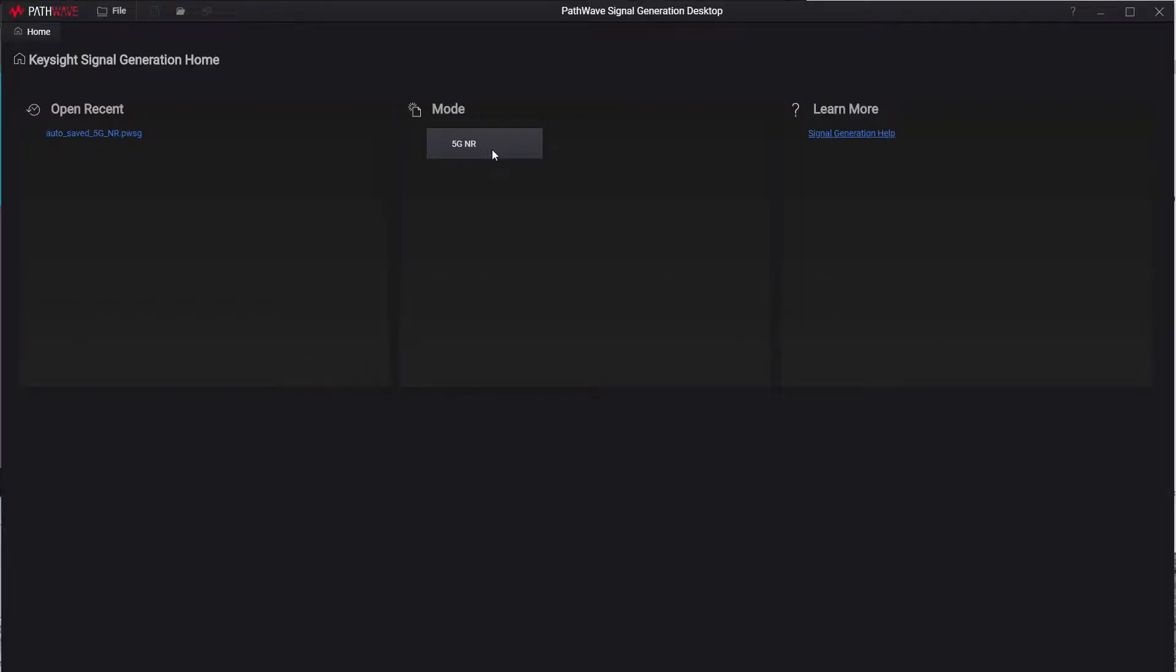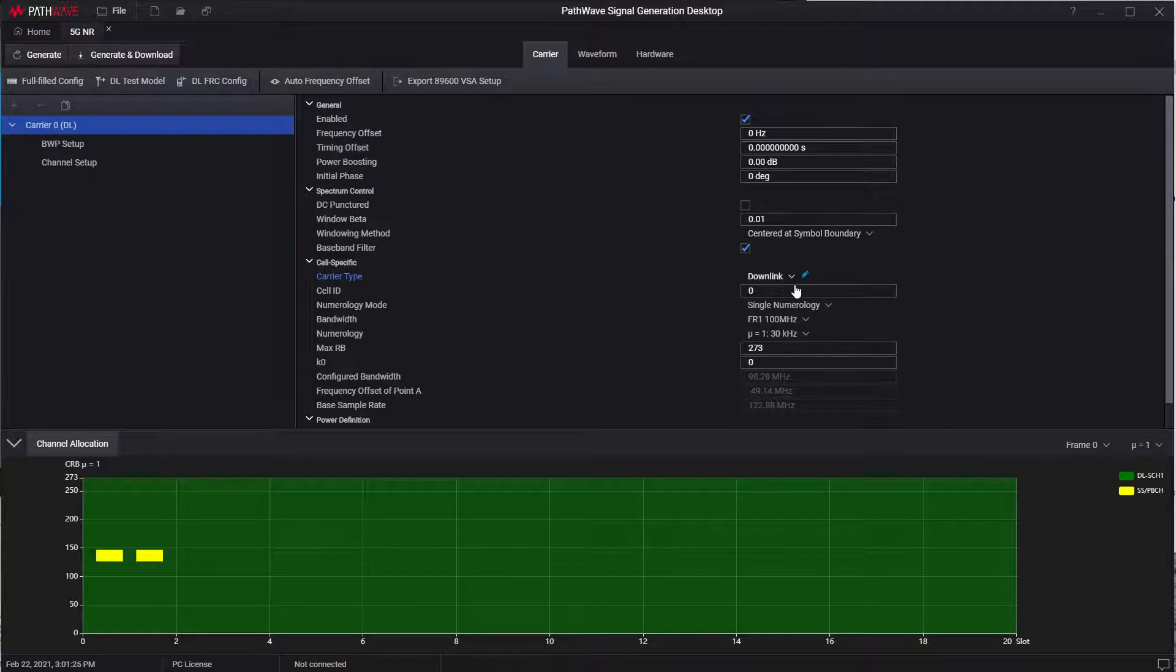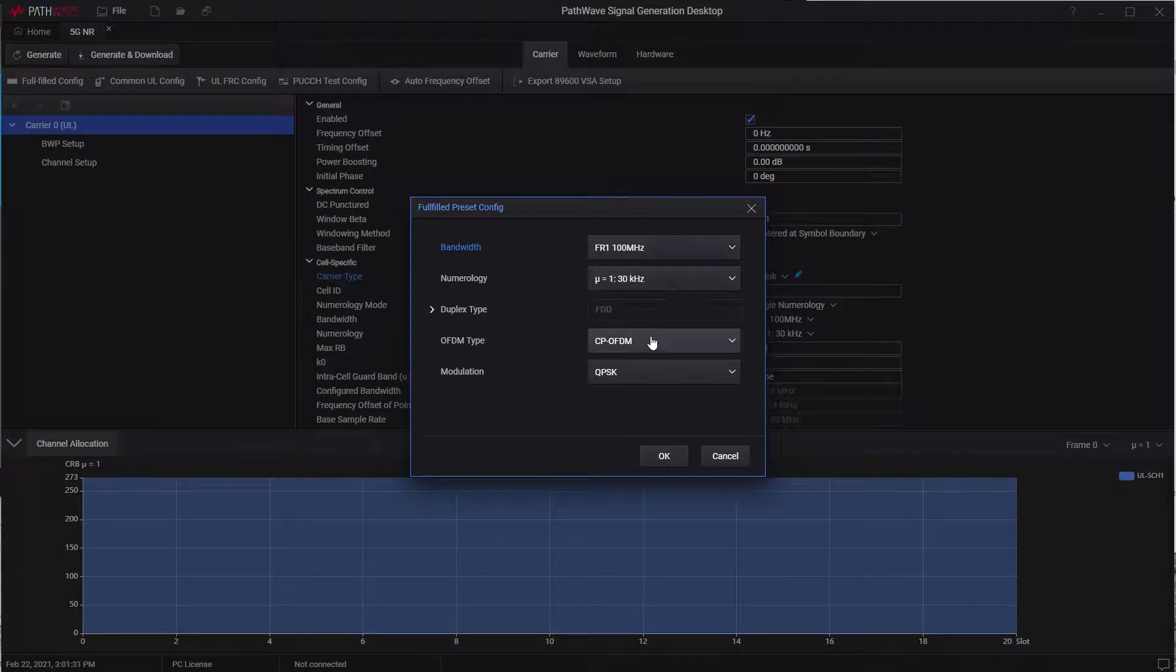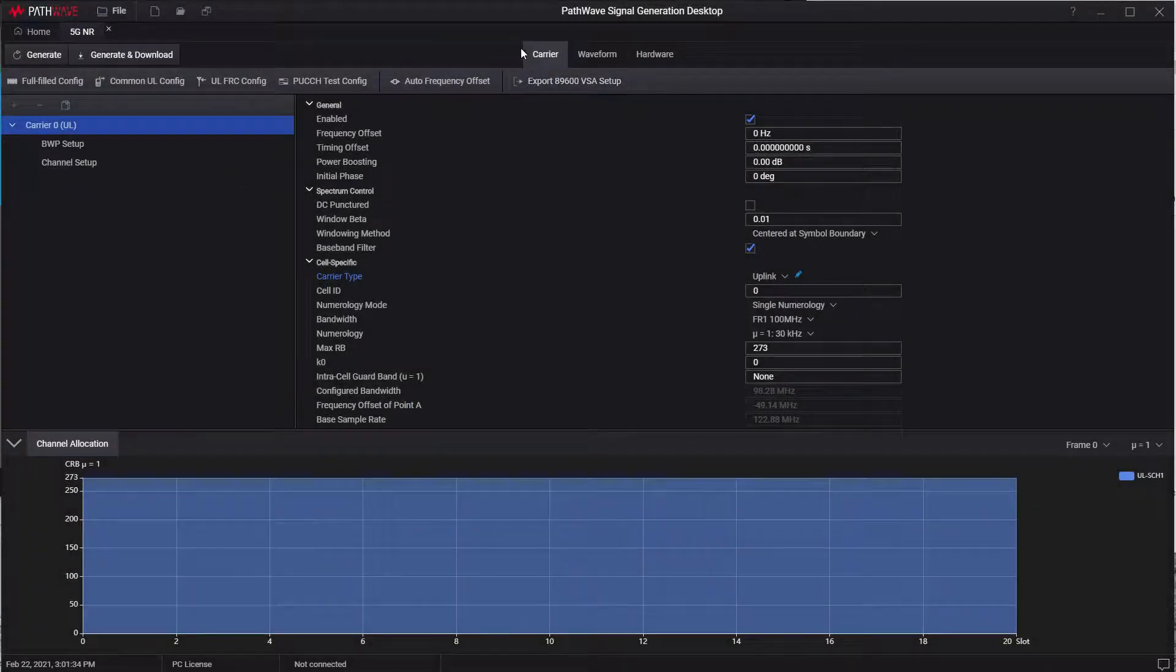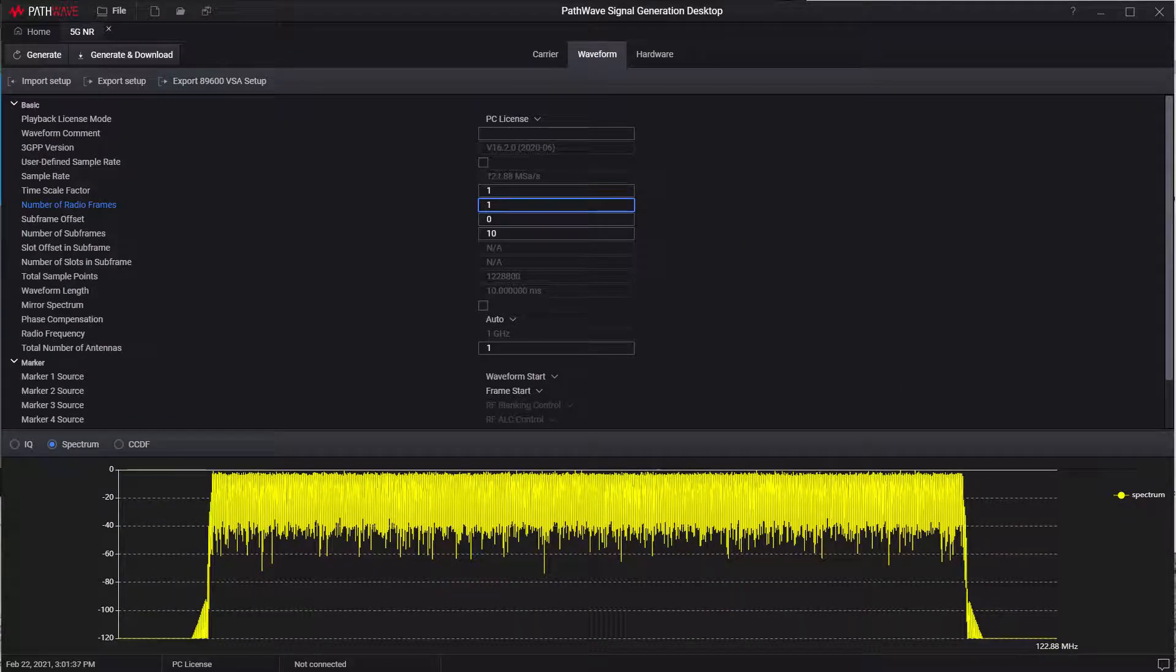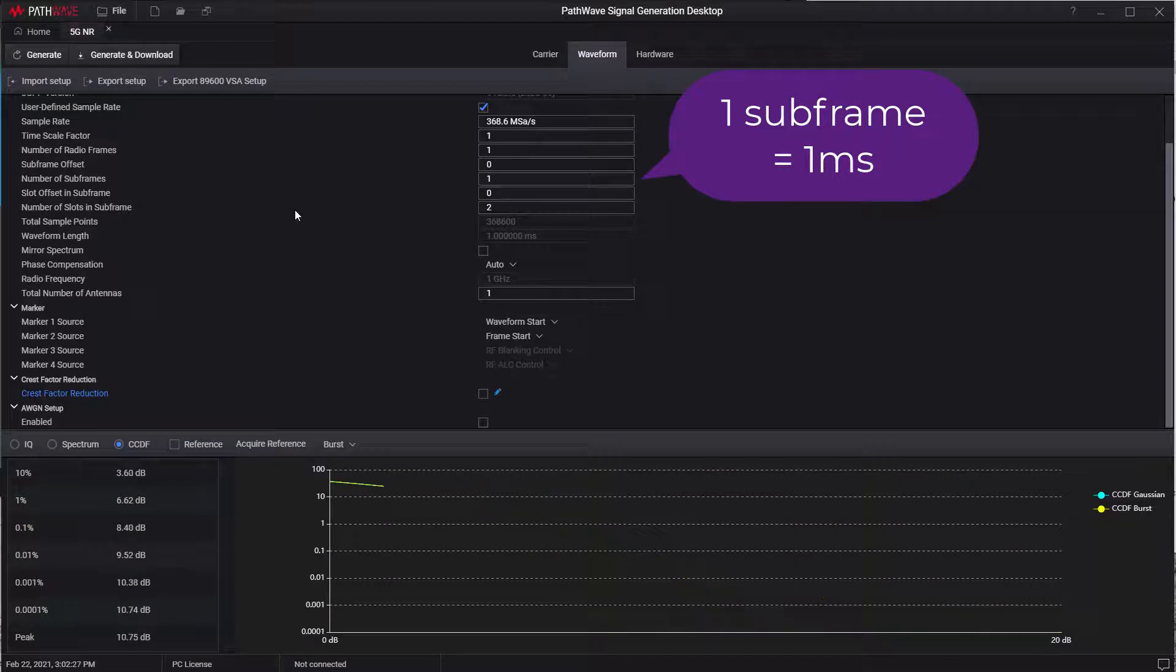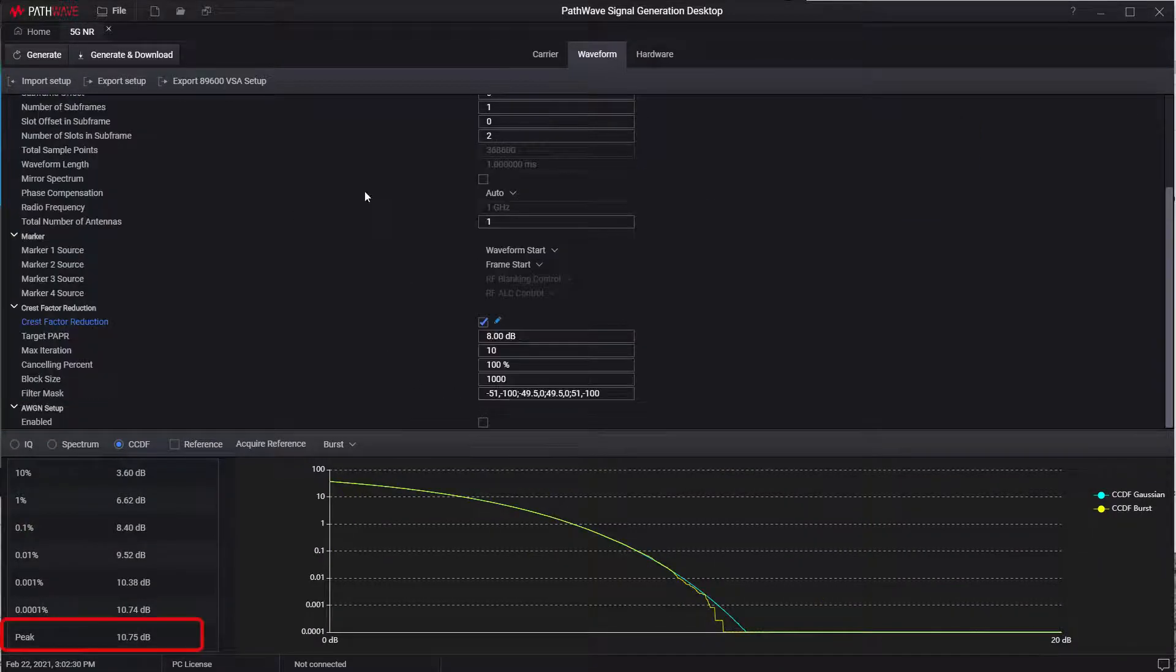Now let me switch to the UXA screen. First, we're going to prepare the waveform file using the PathWave signal generation desktop. So go into the 5G NR mode and select the uplink and also select the predefined 100MHz 30K SCS QPSK. That's pretty much ready, but we want to change the sample rate. So we multiply the base sample rate times 3, and so that gives us the wider bandwidth coverage.